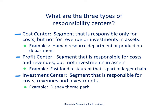There are three different types of responsibility centers: the cost center, the profit center, and the investment center. With a cost center, the segment is responsible only for costs. For example, the human resource department is typically responsible for hiring, training, and evaluating employees, but does not have control over revenue or investments. So the HR department is a cost center. A production department is also a cost center, as mentioned previously.